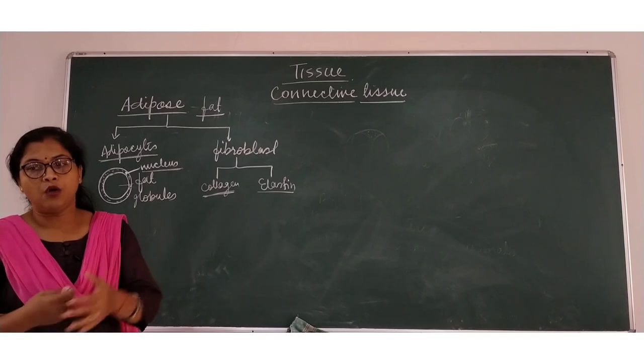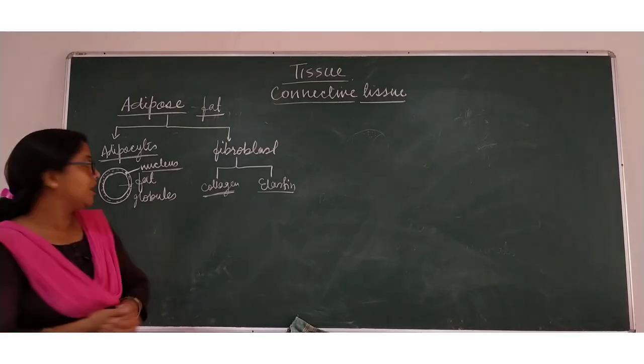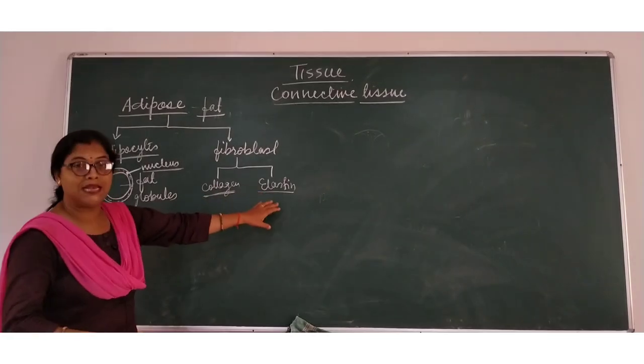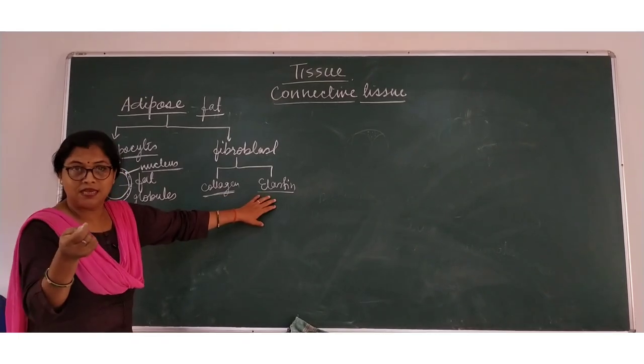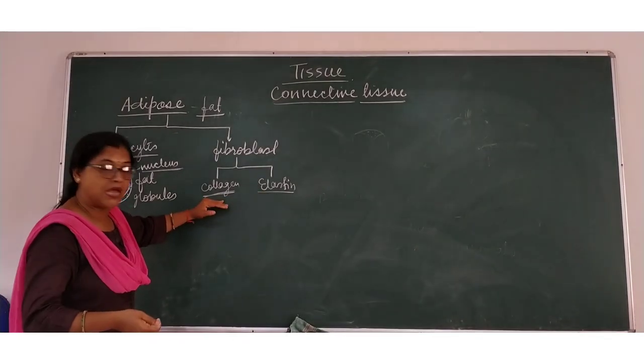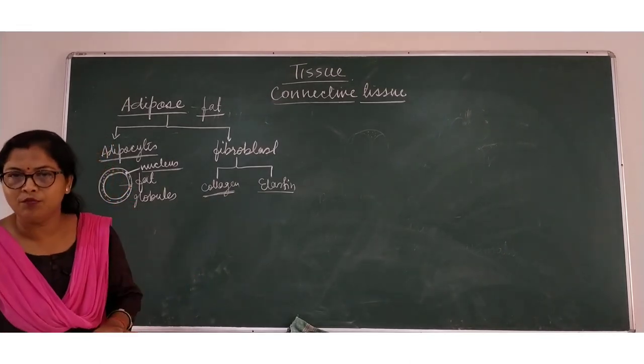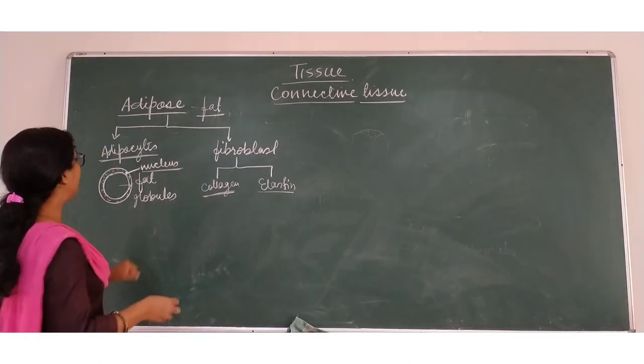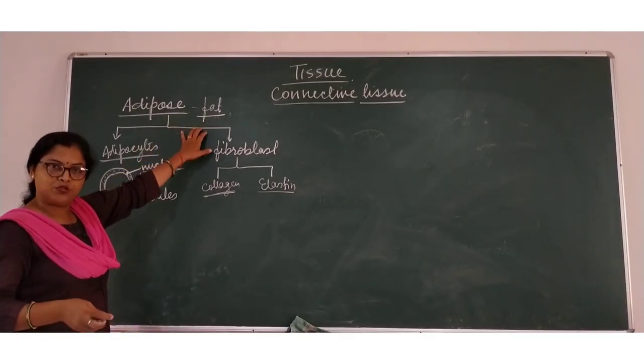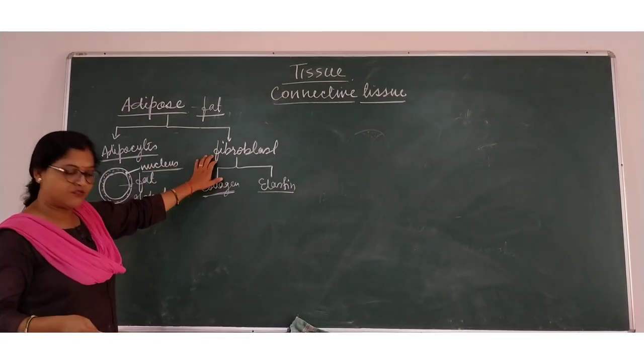If we talk about fibroblast, collagen is multilayered and elastin is single. Collagen is unbranched and elastin is branched. I will show you the diagram also. But now let us go through the fat of adipose. These are the two types of cells.